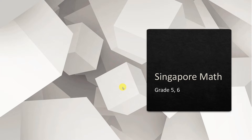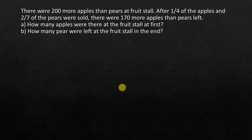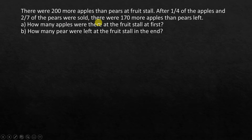Hi everyone. Today we are going to see another Singapore math problem. We will use both models and algebra to solve this problem. There were 200 more apples than pears at a fruit stall. After one-fourth of the apples and two over seven of the pears were sold, there were 170 more apples than pears left. How many apples were there at the fruit stall at first, and how many pears were left at the fruit stall in the end?